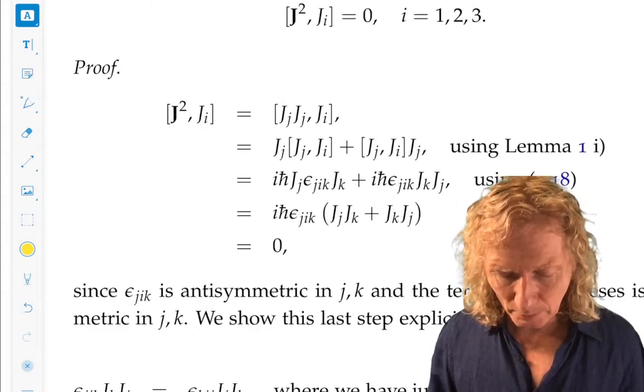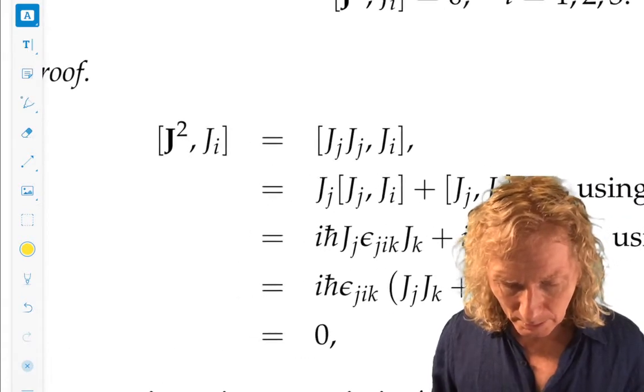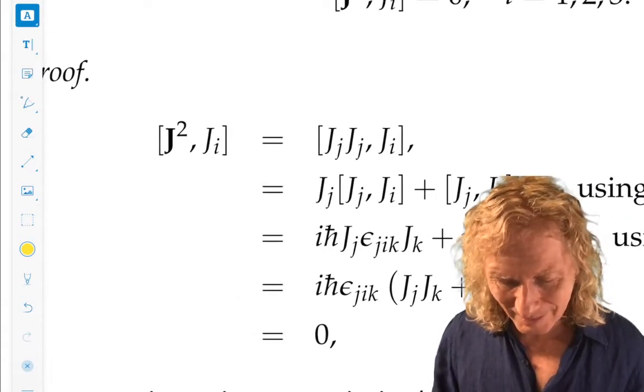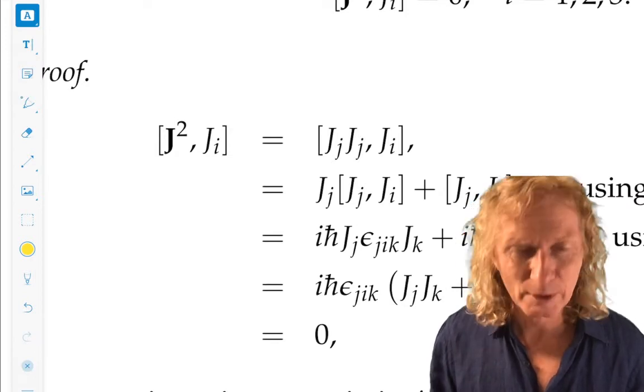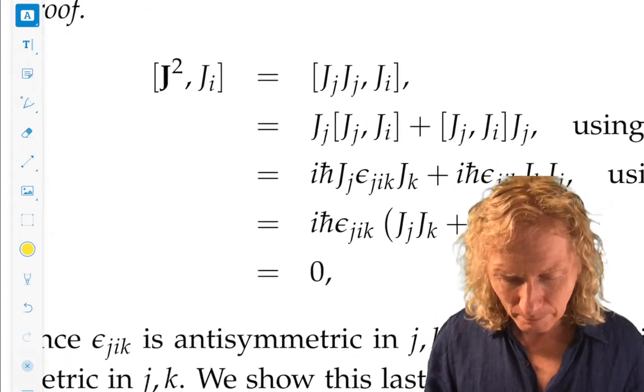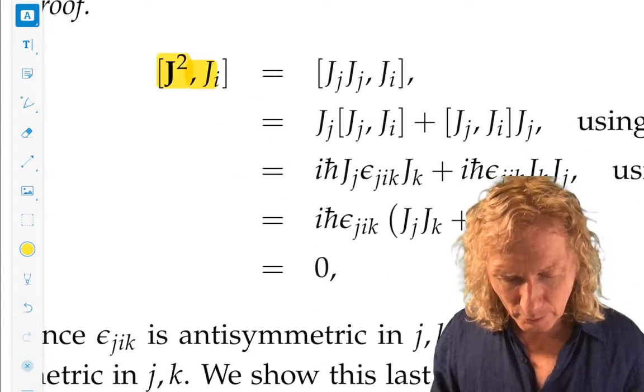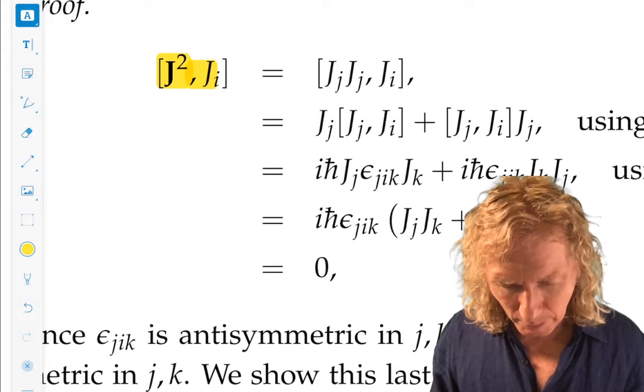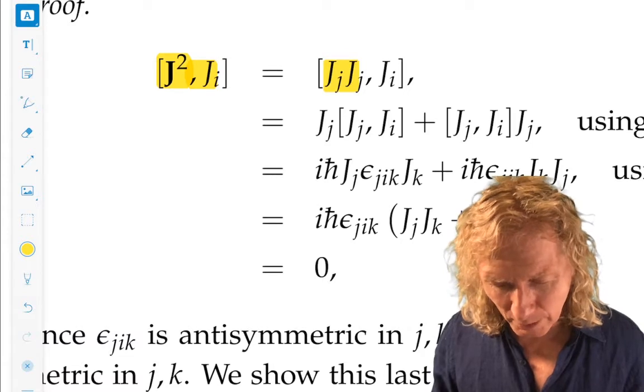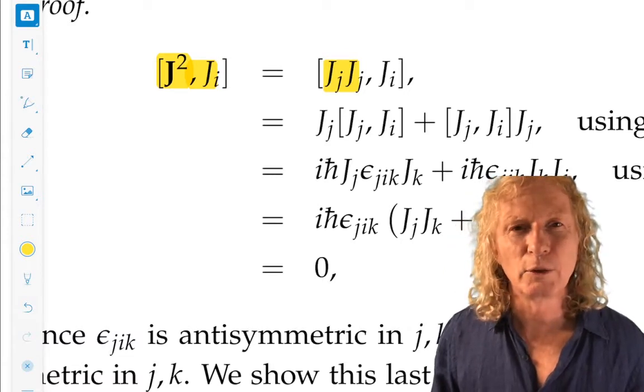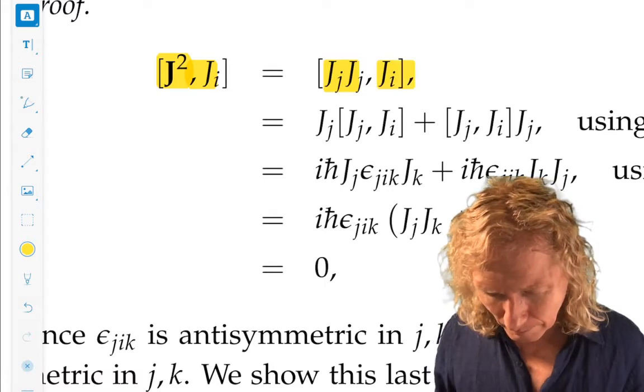So if you go through the proof of this, it's a little bit tricky. I didn't tell quite the truth. This is, I think this is the last time I use i as an index. Sorry about that. It shouldn't cause any trouble here. So J². Commutator J² with Ji. It's Jj, Jj. Why is that J²? The summation condition. Commutator with Ji.